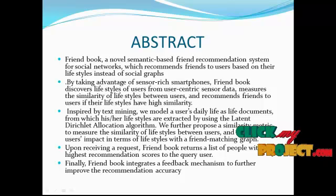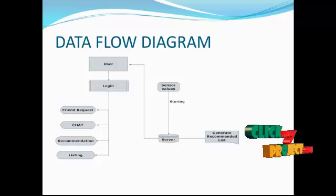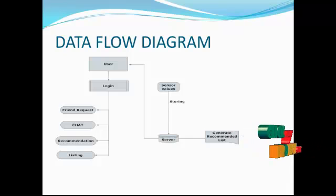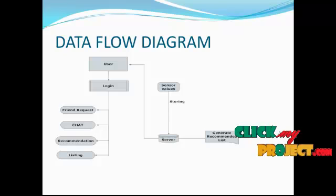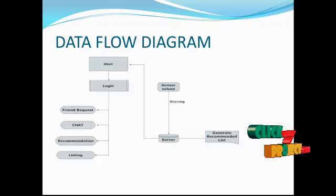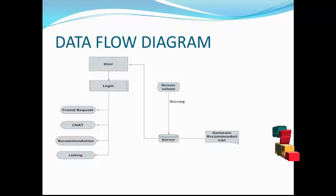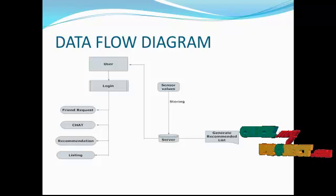Let's see the data flow diagram of this project. The first module is the user. The user can access this module using the login module. Another module is the friend request — in this module, you send a friend request to other users. The chat module allows you to chat with friends made through the app. The next module is the recommendation module, which recommends friends to the user based on who are related to their life cycle.